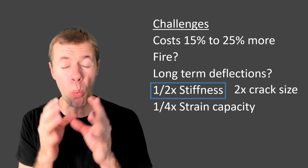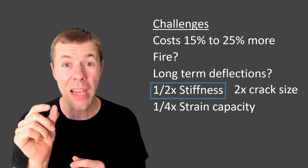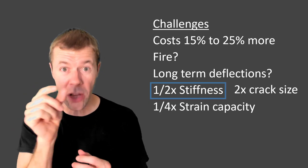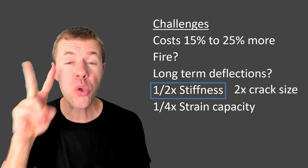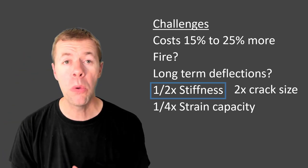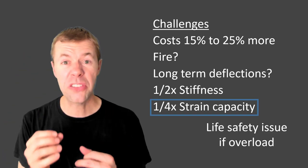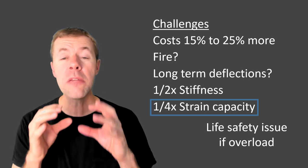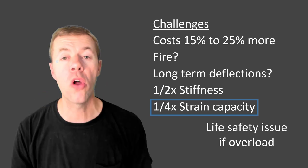The stiffness, if it's about one-half that means the crack size of your concrete, the cracks on the outside are going to be about twice what they would usually be with steel rebar. And the strain capacity, since it's so much lower, it can be a big deal in overload situations.